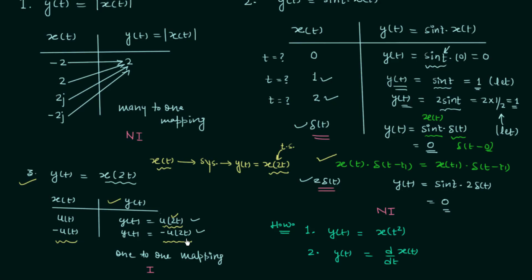Regarding the use of the impulse property: x(t) in our case is sin(t) and δ(t) = δ(t - 0), so t₁ = 0. Comparing with x(t)·δ(t - t₁) = x(t₁)·δ(t - t₁): the δ(t - t₁) part remains the same, but x(t) = sin(t) changes to x(t₁) = sin(0) = 0. So we have 0·δ(t) = 0. This is how the property is used — I have already explained this property in detail while covering the properties of the impulse signal.